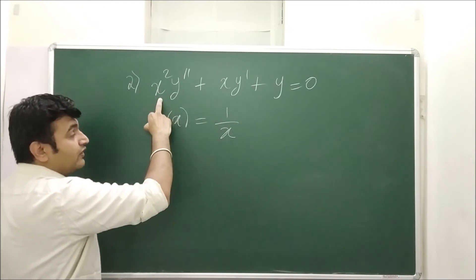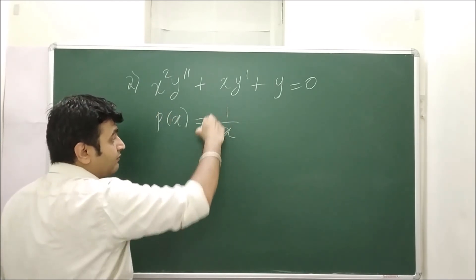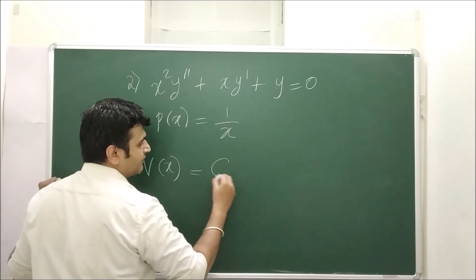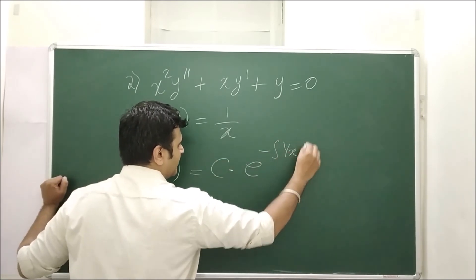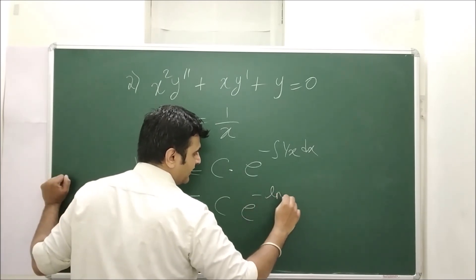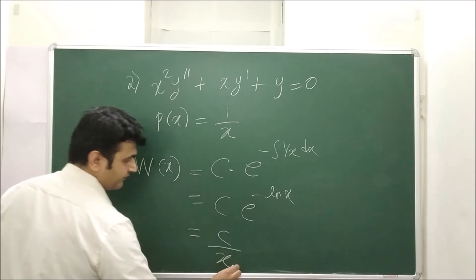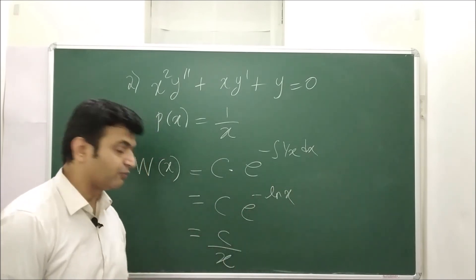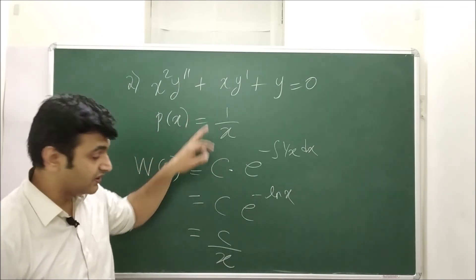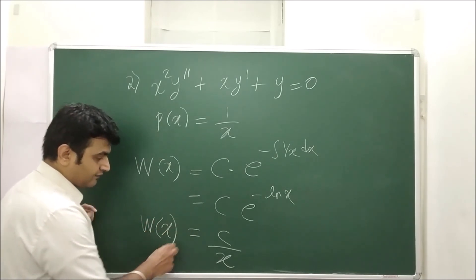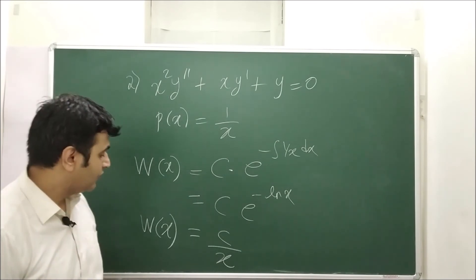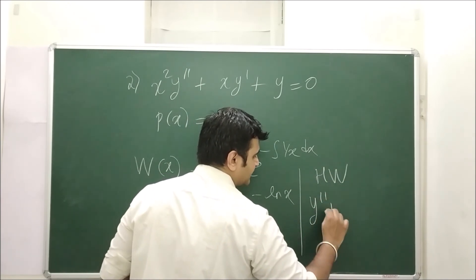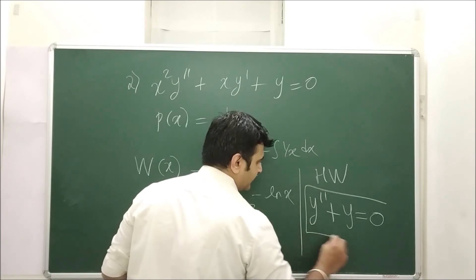Let me take one more example. In this case, the leading coefficient is not 1, so we divide through — p becomes 1/x. Therefore, W(y1, y2) = c·e^(−∫(1/x)dx) = c·e^(−ln x) = c·x^(−1) = c/x. So for this differential equation, the Wronskian is a constant multiple of 1/x. As homework, find the Wronskian for the next differential equation shown.